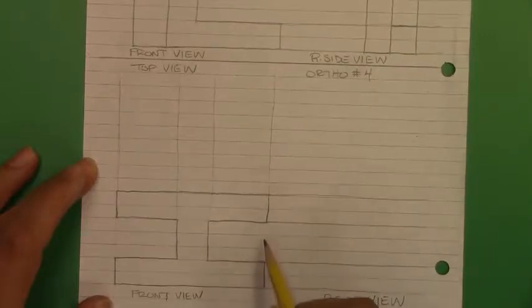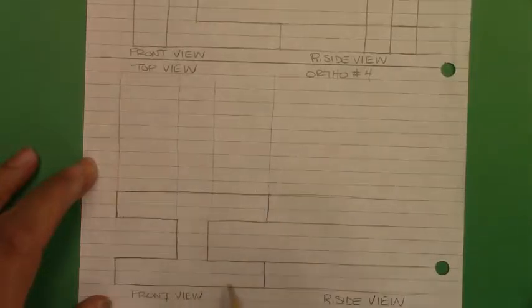So like before, corners are good. Horizontal lines are good from front to right side. Vertical is good. And corners are good also from front to top.